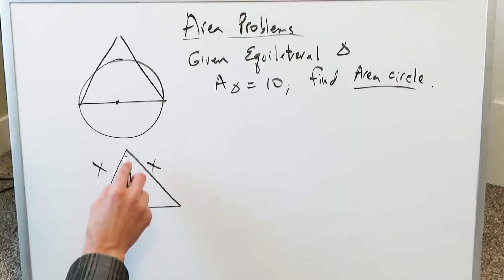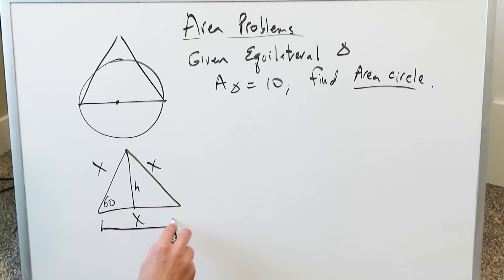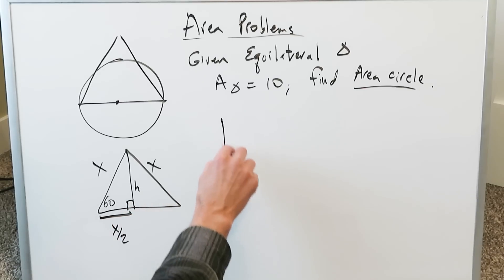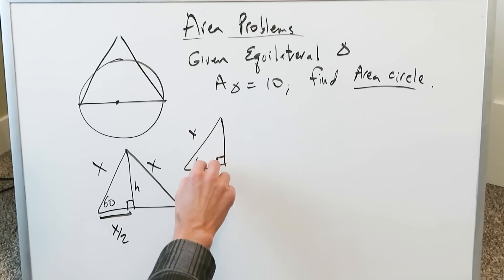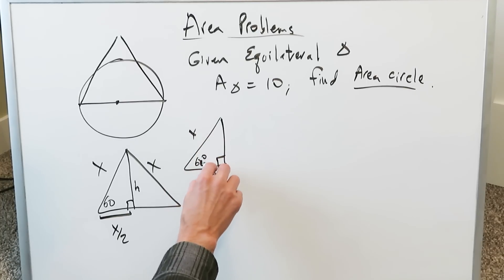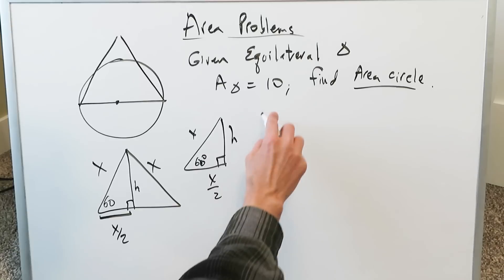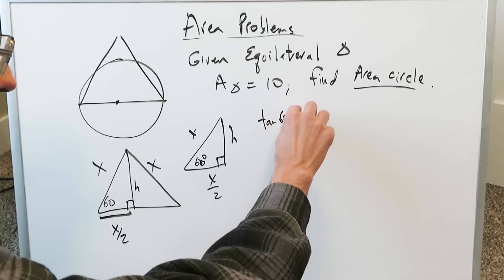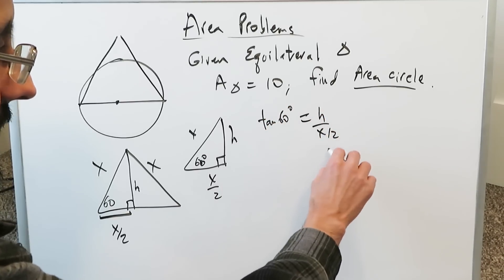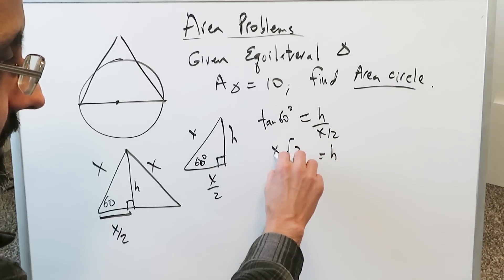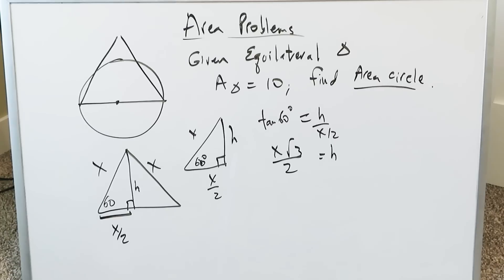If it's an equilateral triangle, all sides are equal — call them x — and each angle is 60°. We can draw a height. Rather than looking at the full base, let's look at half the base, which is x/2. Using trigonometry: tan(60°) = h / (x/2), so height h = tan(60°) · (x/2) = (√3 · x) / 2. That is the height dimension.